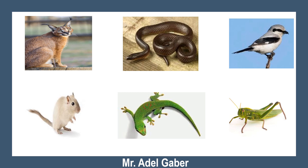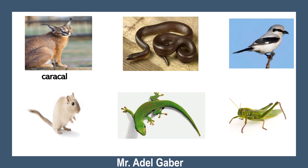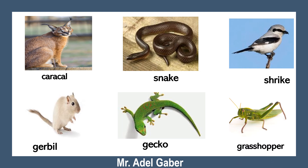Look at these pictures. Do you know the names of these animals? Yes, the first one is caracal. Snake. Shrike. Jibble. Gecko. Grasshopper.